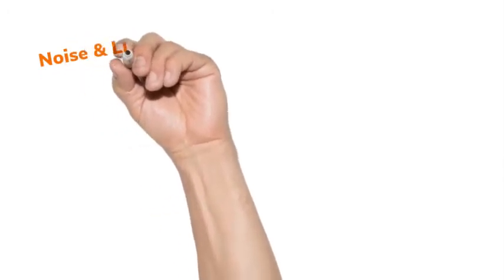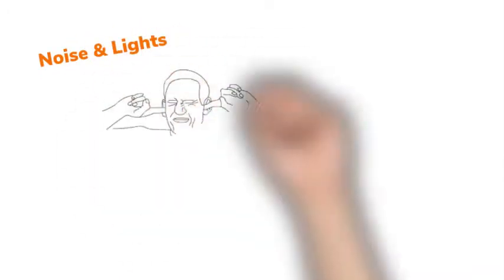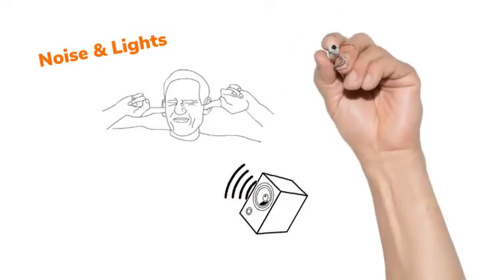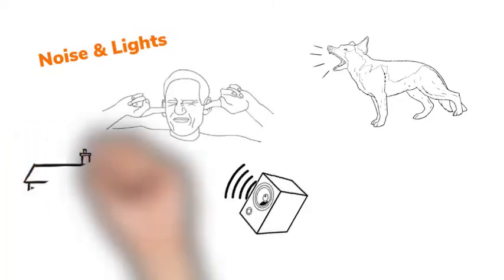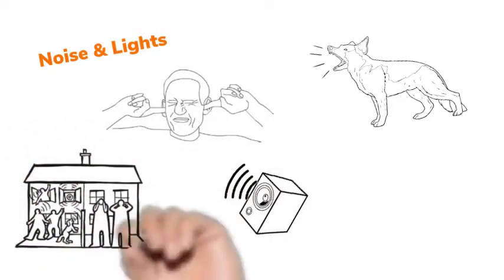So this next one is noise and lights. And this is less of an issue with your roommates than it is with the neighbors, because if your roommate's playing their stereo loud, you can just say, hey, turn the stereo down, I'm trying to study or something. But when it's the neighbors and they've got a barking dog or something, it's really annoying. And the walls and floors just seem to amplify that noise.